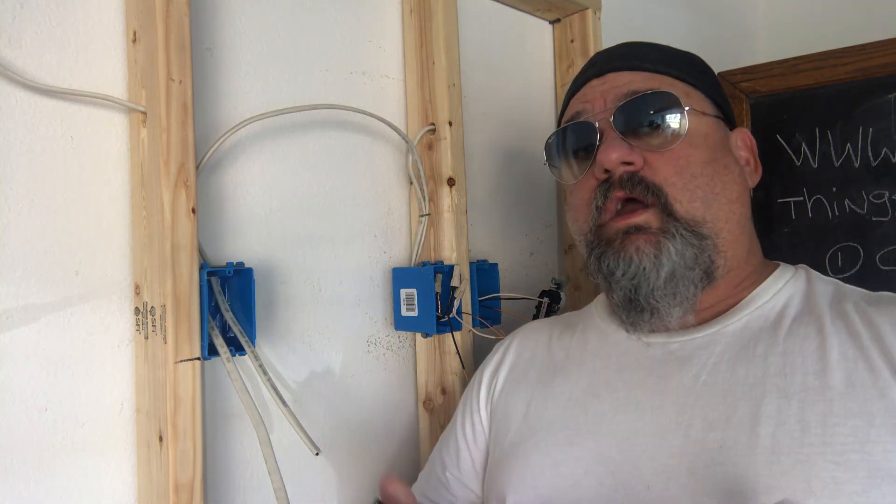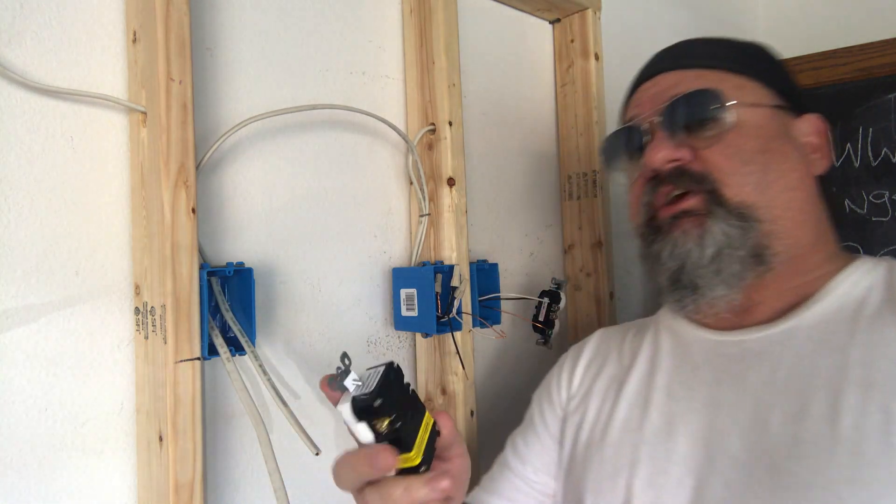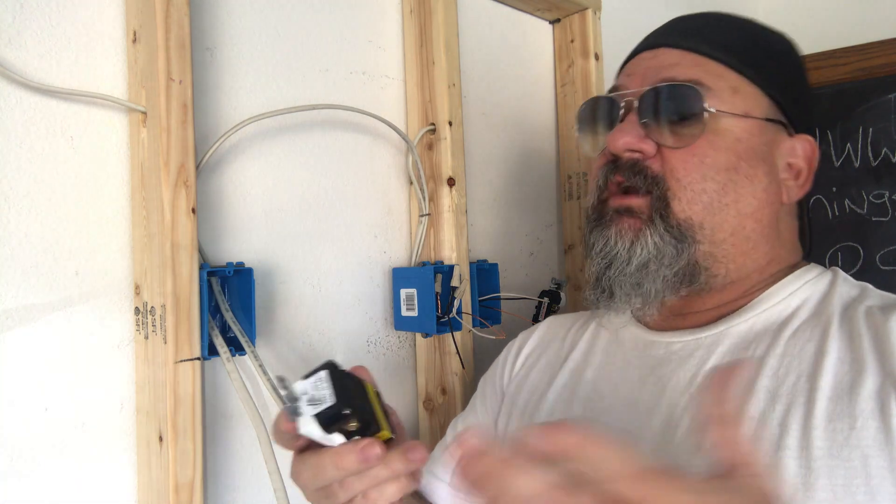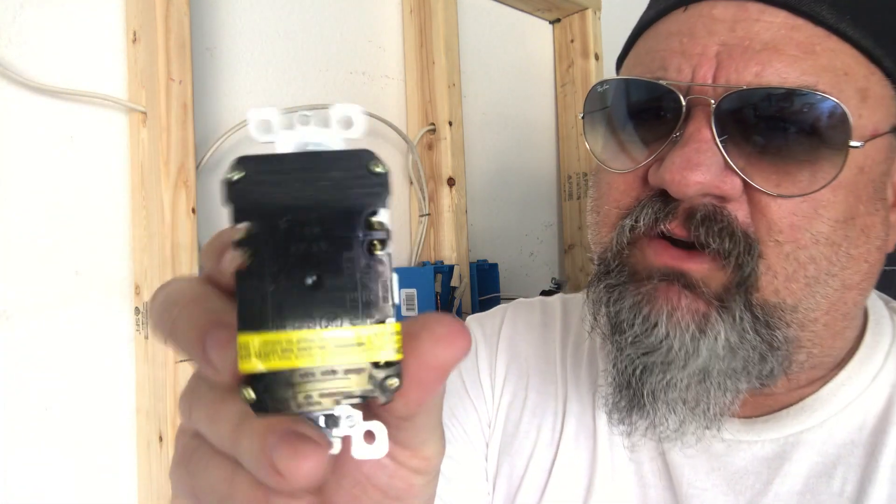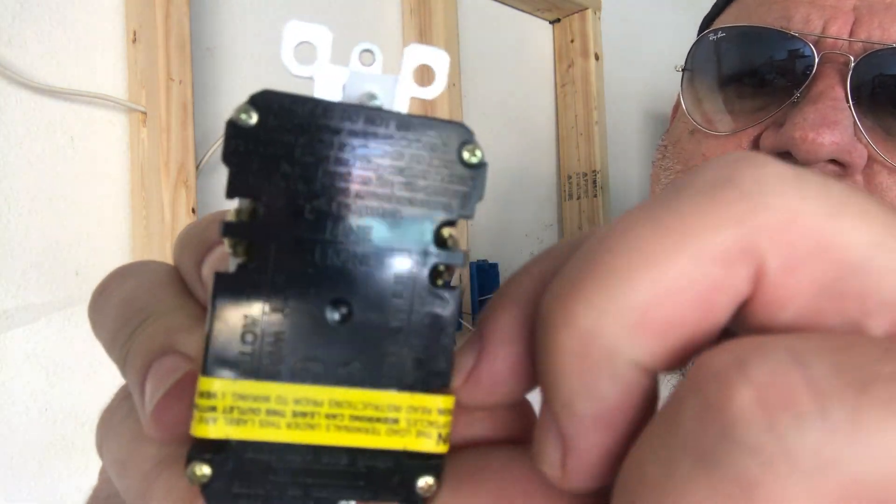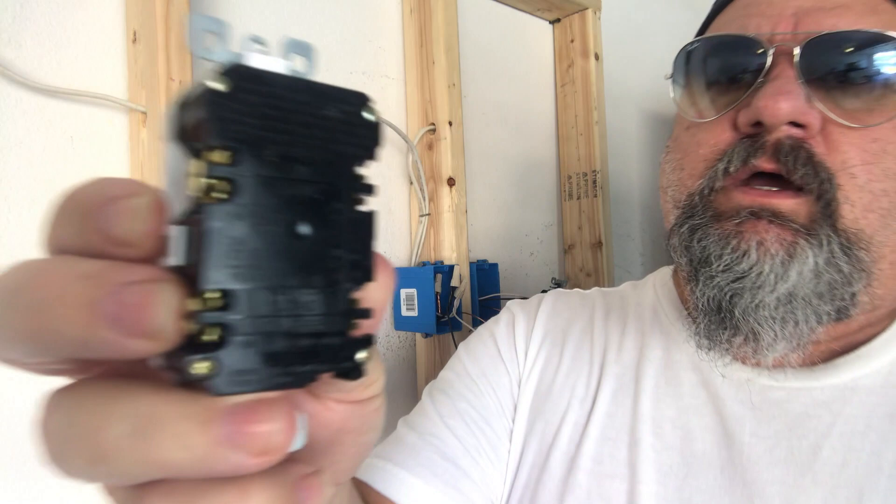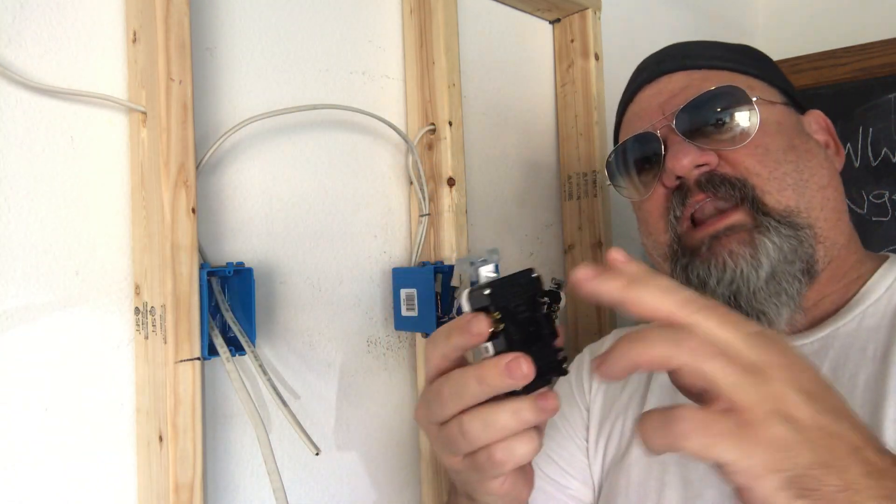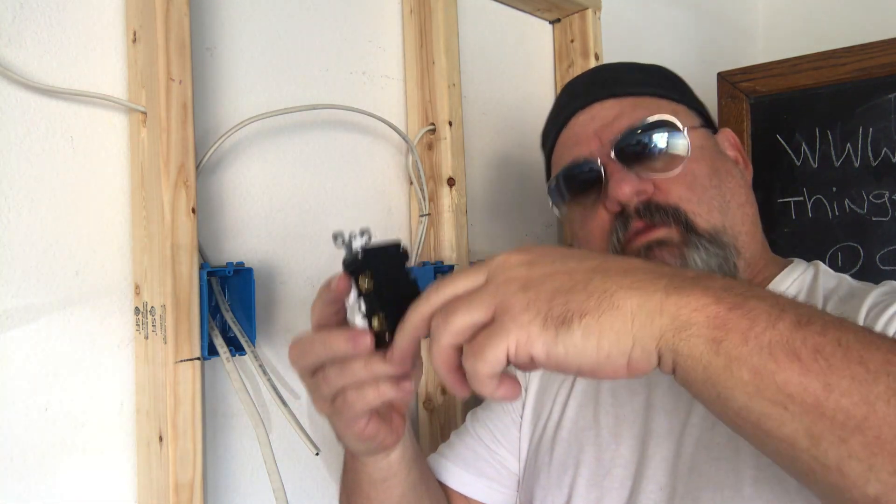First things first, where do I put the wires? If you look on there, see I don't know if you could see it, got line and load. Well the load will be underneath the sticker, those are always on these so you don't mess it up. The line means that's the power coming in, the load is power going out.